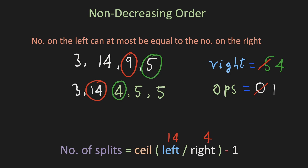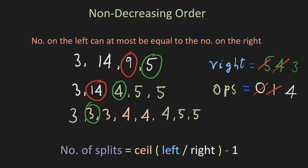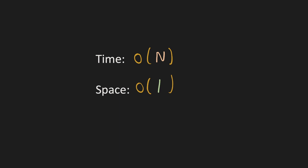Similarly, we compare 14 to the new right element 4. The number of split operations for this will be 3, so we add 3 to our answer, giving 4 parts for this split. When we integer divide 14 by 4, this becomes our new rightmost element. Our new array looks like this. When we compare the leftmost 3 to its new right element 3, both are equal and no split is required. So in total we required 4 split operations. The time complexity is O(n) since we only traverse the array once from the right side, and the space complexity is constant.